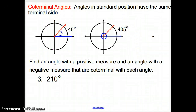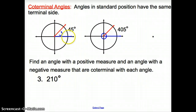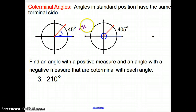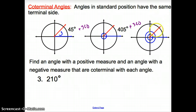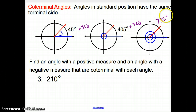Coterminal angles are angles in standard position that have the same terminal side. Here we had the initial side to the terminal side, which was 45 degrees. But if we continue that rotation, we just add 360 to get 405 degrees, and we can keep going around and around. If we went around one more time, we would add another 360, so that angle would be 765 degrees.